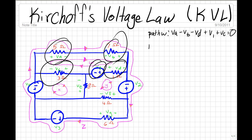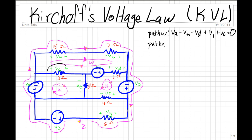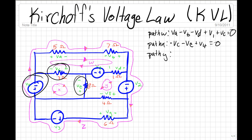Now let's look at path X. For path X, we have this voltage drop which is negative, so negative Vc, plus this voltage drop which is also negative, so minus VE, plus this voltage drop which is positive, so it's plus V4, and the sum of these should equal to zero.